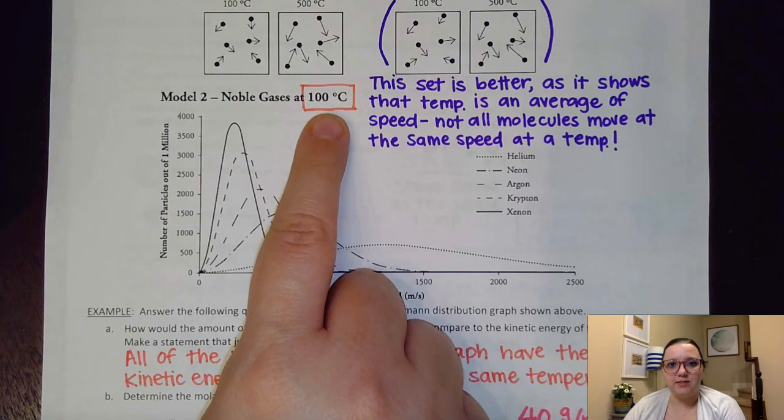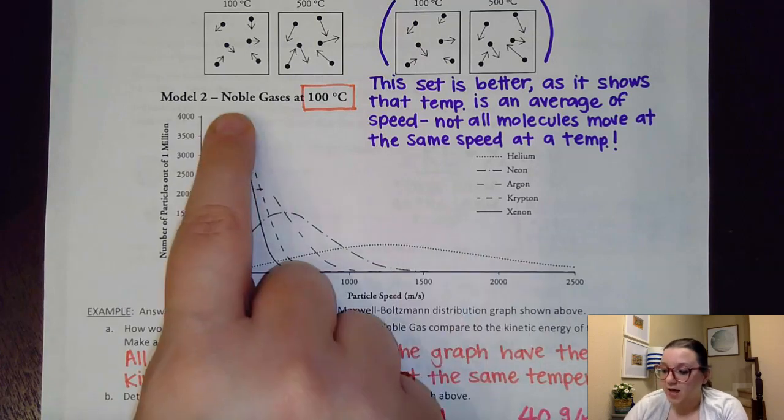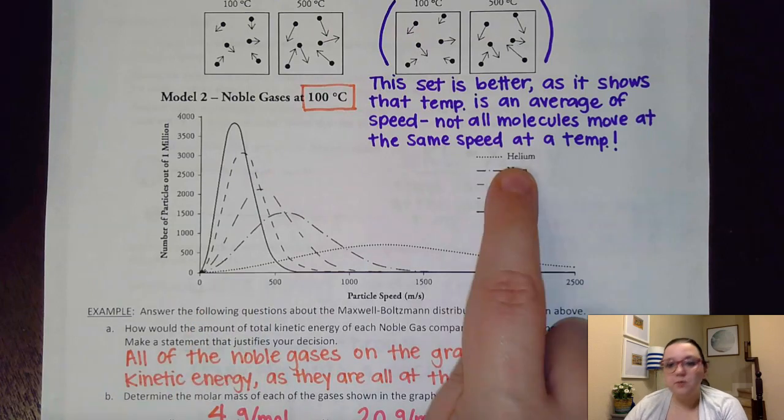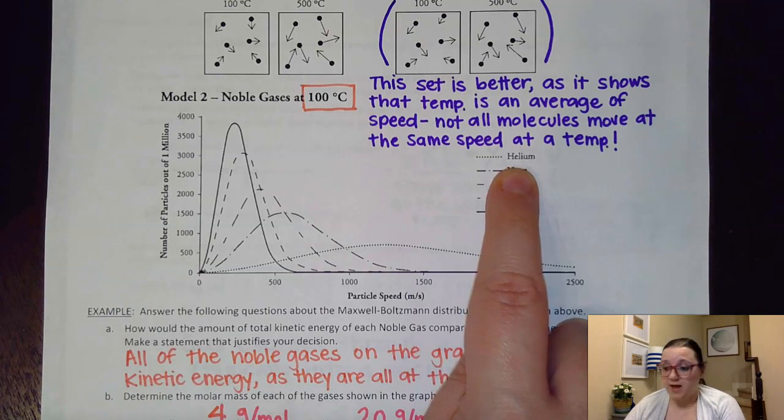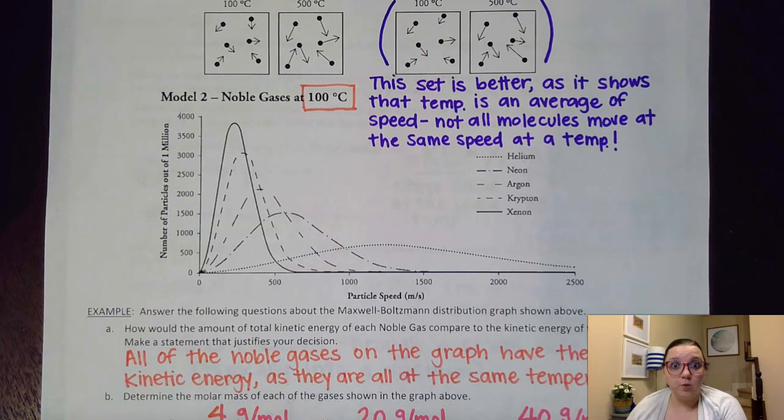And what we noted about this graph is that our heaviest molecule, the xenon that had the largest molar mass, its particles actually had the slowest overall speed. And on the flip side, helium, which was the lightest particle, it had the smallest molar mass, had the fastest particle speed out of these noble gases.